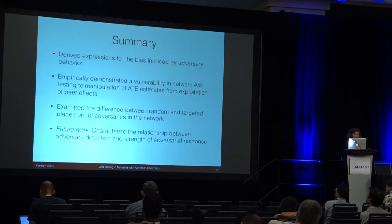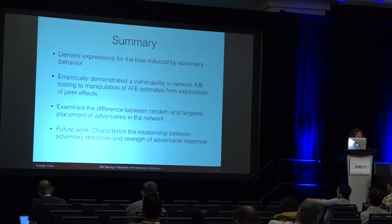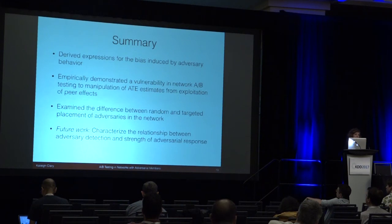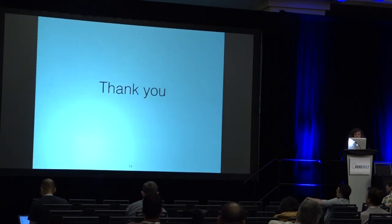In summary, we derived expressions for the bias induced by adversary behavior. We also empirically demonstrated a vulnerability in network A-B testing to manipulation of ATE estimates from exploitation of peer effects. We showed that if there's a strong peer effect in the network, then there's a serious problem if you have adversaries trying to exploit that. We also looked at the difference between randomly placing these adversaries and targeting them specifically.